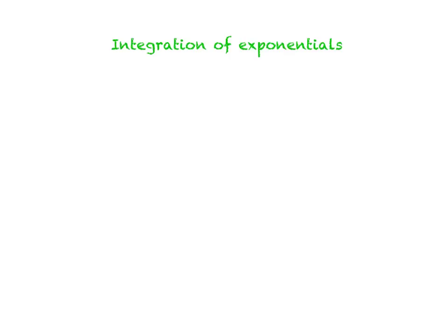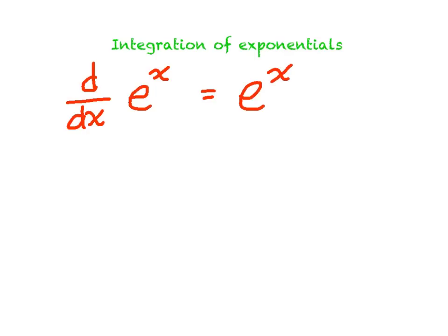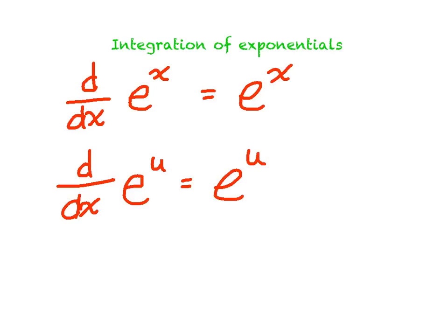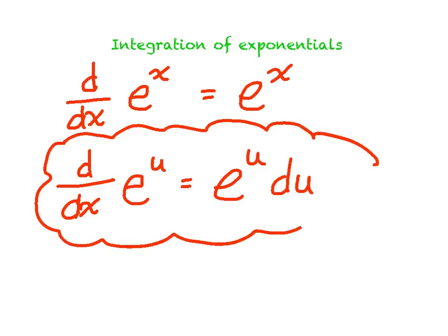I'm going to dive right in and start with a little review of derivatives of exponentials before we start integrating. The derivative of e to the x is just e to the x. It's usually not that straightforward — they usually have some junk up in the exponent, and we have a rule for that. The derivative of e to the u is e to the u times the derivative of the exponent, so times du. That's the one you see on the quiz all the time: e to the u times du.